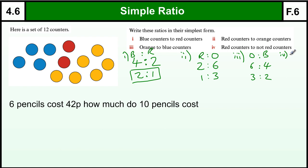And the last one, red to not red. Now I'm going to represent that by not red. So there's 2 red ones and there are 10 not red. And that cancels down. We'll halve it to 1 to 5.